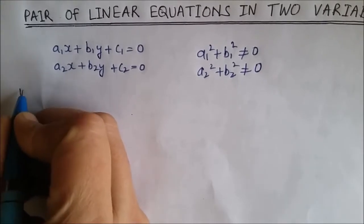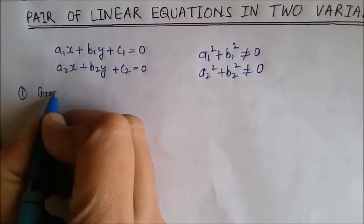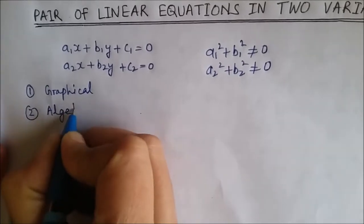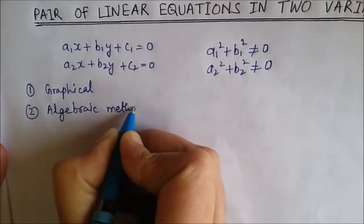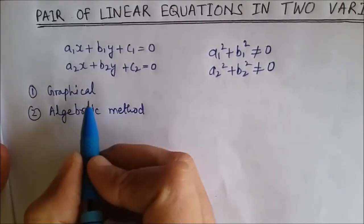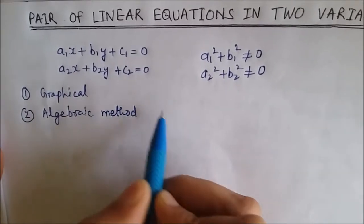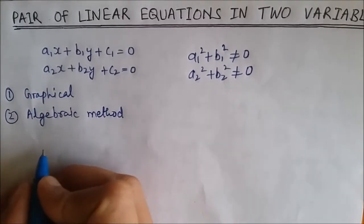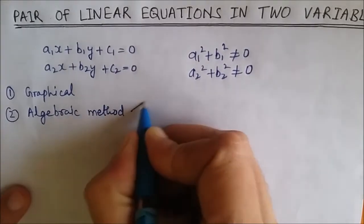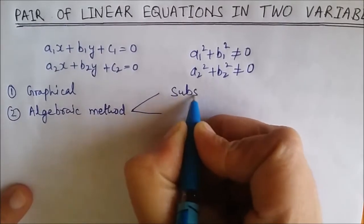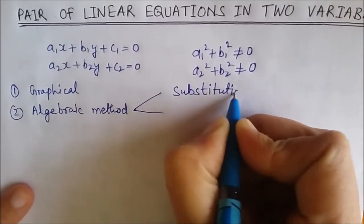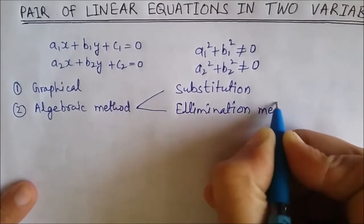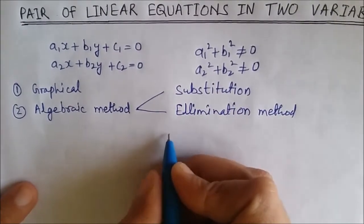There are basically two types of methods of solving linear equations in two variables: number one is graphical method and number two is algebraic method. In graphical method, we draw the graph of two equations and the intersection point is called the solution. In algebraic method, there are many methods — number one is substitution method, number two is elimination method, and number three is cross multiplication method.